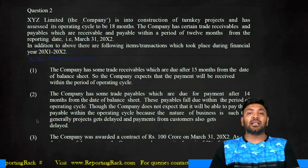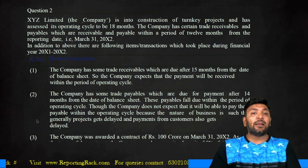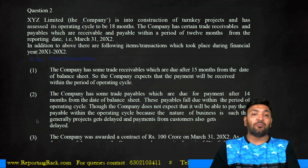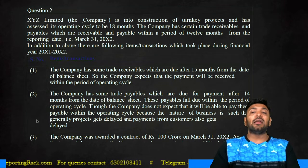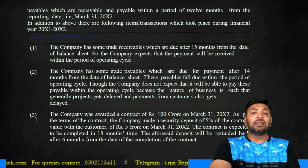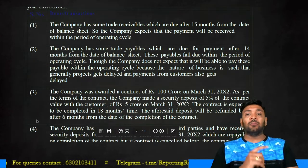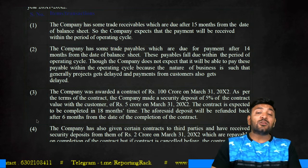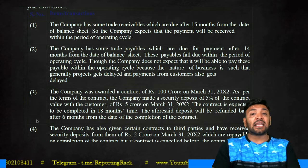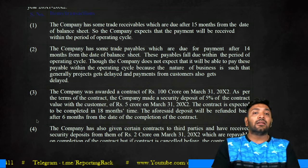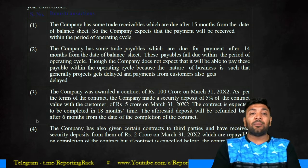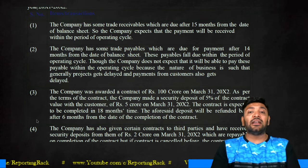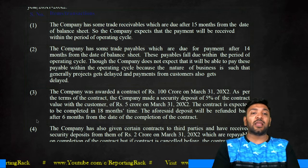Question number two: Company XYZ is into construction of a turnkey project and has an operating cycle of 18 months. The company has certain trade receivables and trade payables which are receivable or payable within 12 months from the reporting date of 31st March 2012. The company has some trade receivables due after 15 months from the date of the balance sheet, but the company expects payment will be received within the operating cycle.